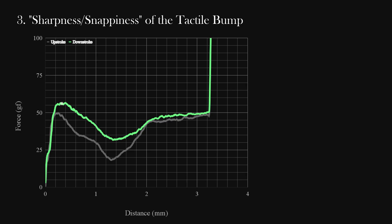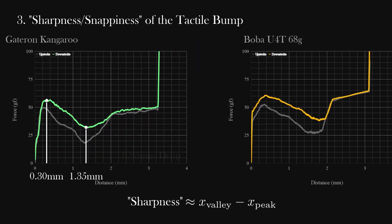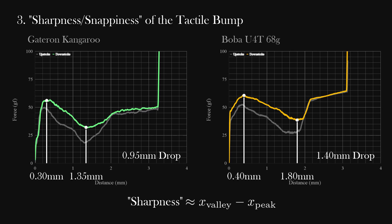Number 3, the sharpness-slash-snappiness of the tactile bump. Since the bump is characterized by the drop in force at its peak to the lowest point, its roundness can be characterized by the distance between these two locations. If you compare Gateron Kangaroos to Boba U4Ts, Gateron Kangaroos have a sharper bump. Again, I believe this is generally a good enough way to quantify the feeling, but I believe a more accurate characterization is to divide that distance by the drop in force between the two locations. Higher the value, the rounder the tactile feel.